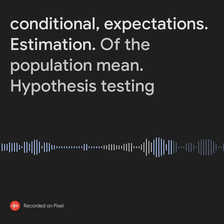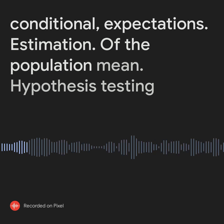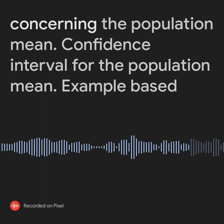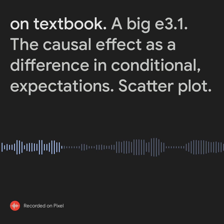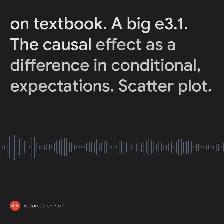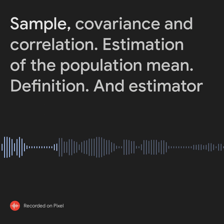Topics covered include: estimation of the population mean, hypothesis testing concerning the population mean, and confidence interval for the population mean. An example is based on textbook example E3.1. We also cover the causal effect as a difference in conditional expectations, scatter plots, sample covariance, and correlation.